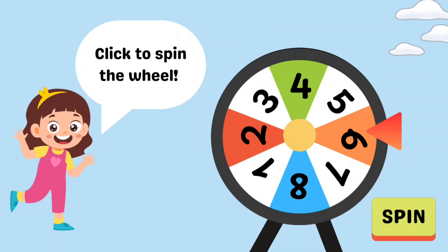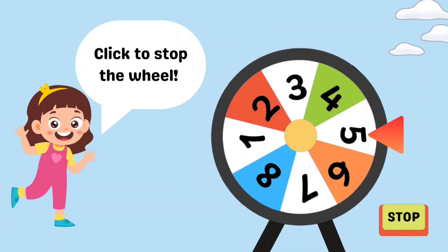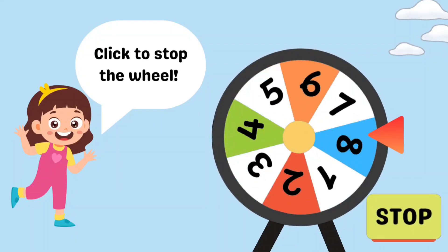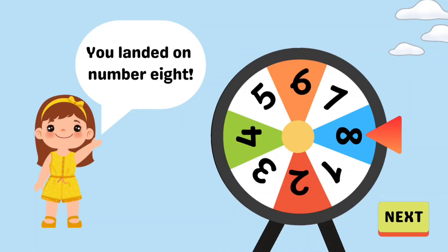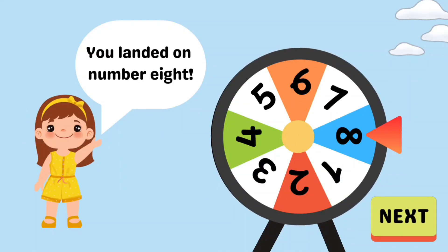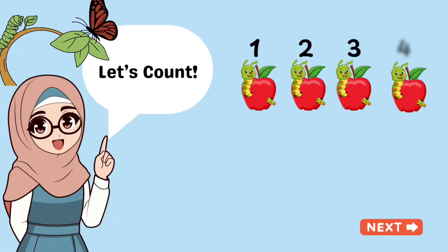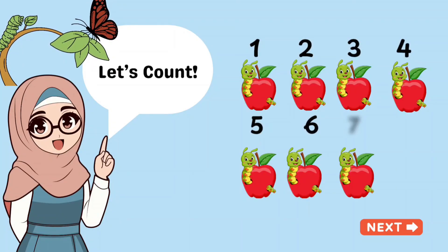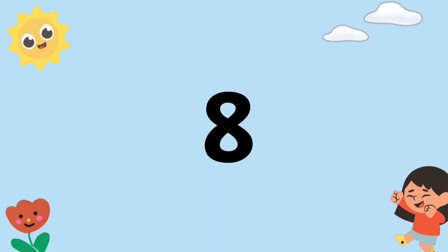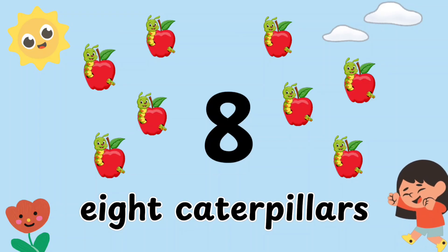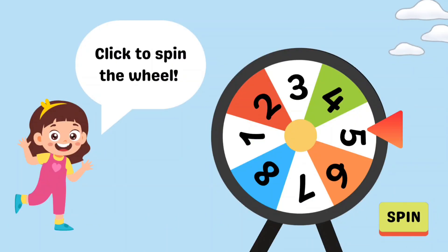Six dragonflies. Click to spin the wheel. Click to stop the wheel. You landed on number 8. Eight caterpillars!